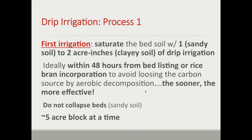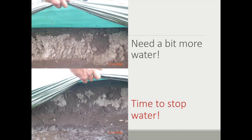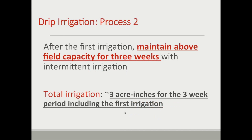The sooner the irrigation can be applied after the rice bran was incorporated, the better. Most farmers have found that you can do about a maximum of five-acre blocks at a time. This shows checking how well the irrigation is going in terms of saturating the beds — the upper picture is clearly not sufficiently wet yet, and the lower picture shows water starting to puddle at the base of the bed, which is time to stop. After the first irrigation, the goal is to keep the field at around or above field capacity for the remainder of the three weeks — a total of about three acre-inches for the three-week period.